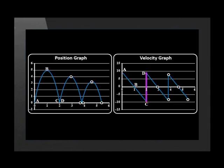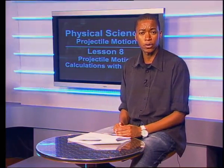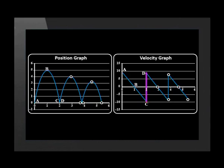Is the object in free fall from C to D? No. From C to D, the ball touches the ground which exerts an upward force on the ball. This force accelerates the ball upward, so it's not in free fall. Is the object accelerating upward from C to D? Yes. The positive gradient shows this — the graph slopes upward to the right from C to D.